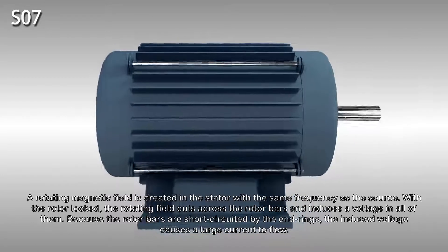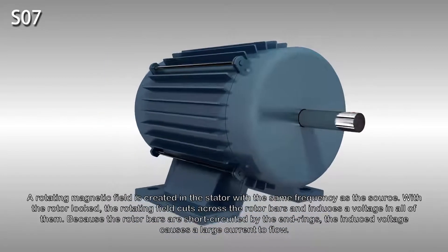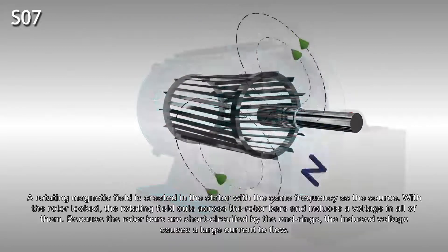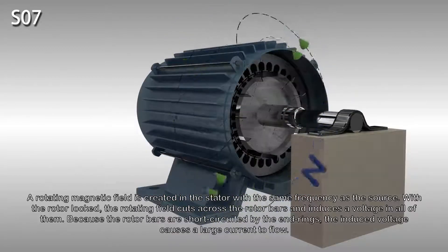A rotating magnetic field is created in the stator with the same frequency as the source. With the rotor locked, the rotating field cuts across the rotor bars and induces a voltage in all of them. Because the rotor bars are short-circuited by the end rings, the induced voltage causes a large current to flow.